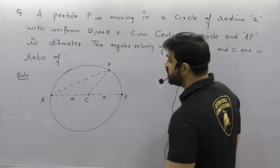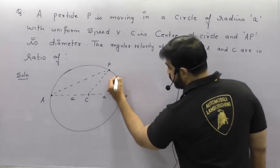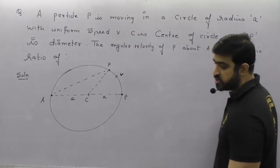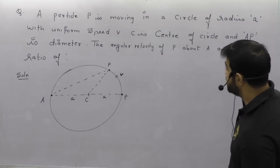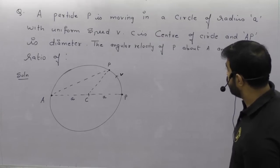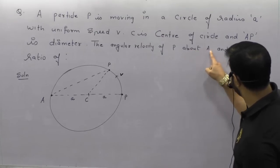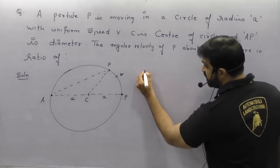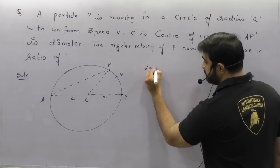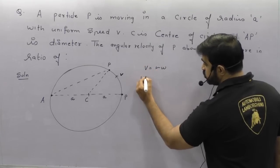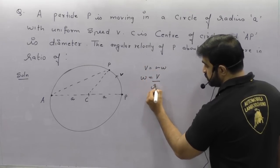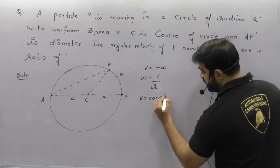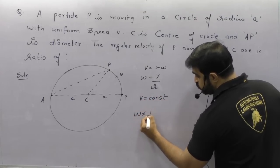You know that the speed over here is going to remain constant, that is V is going to remain constant. Now I need omega of P about A and C in the ratio. Omega formula: you know V = R·omega, so omega = V/R. But V is constant, so omega is inversely proportional to R.